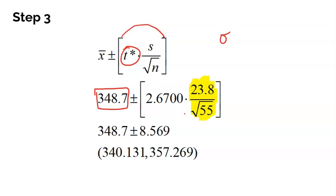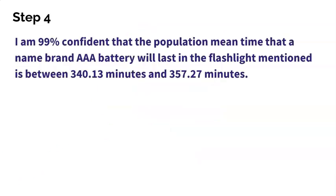Multiply all of that together back there. You could do that in one big swoop on your calculator. I got 8.569. Add it to get the top, subtract it to get the bottom, and we get this beautiful interval. Now we're ready to give our estimate here or our final interpretation, excuse me. I'm 99% confident that the population mean time that a name brand AAA battery will last in the flashlight mentioned is between 340.13 minutes and 357.27 minutes.